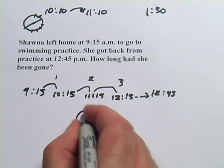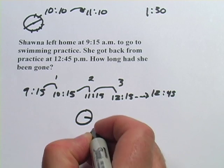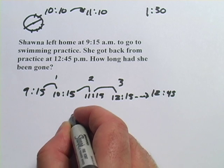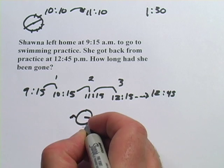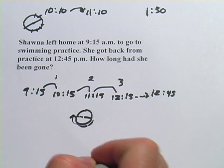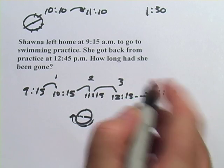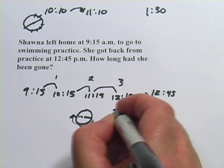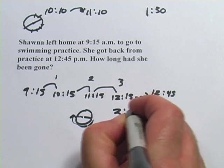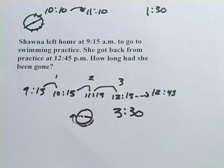Or if I'm visualizing it on a clock, it's 12:15 there and I have to go around to 12:45 — that's half an hour. So the answer for that one is three hours and 30 minutes. Those are some problems about elapsed time.